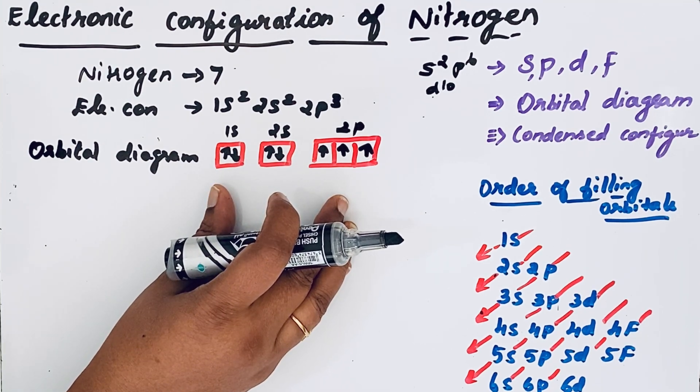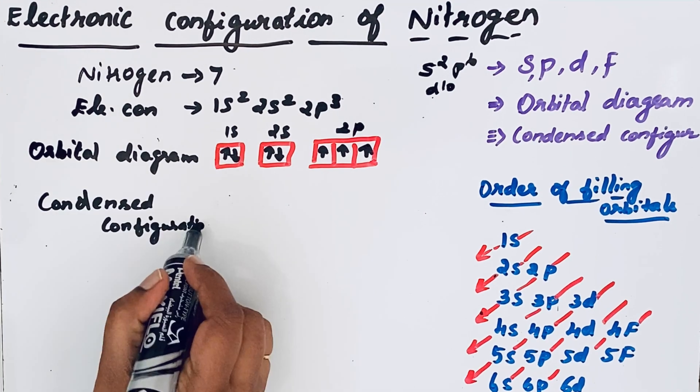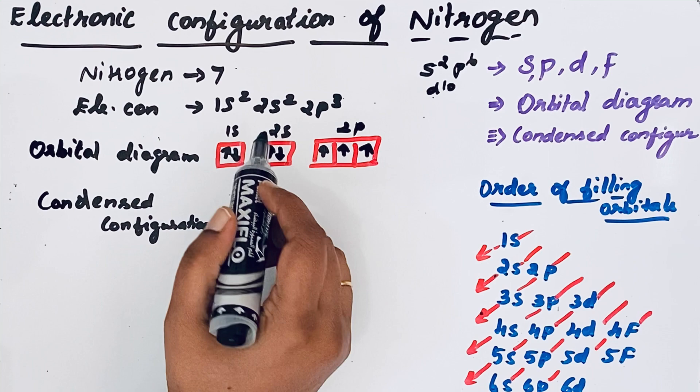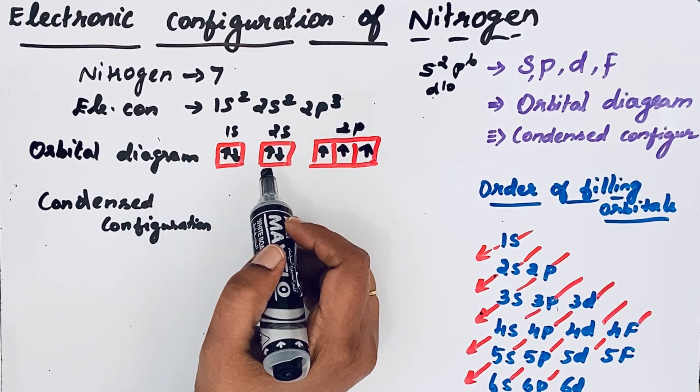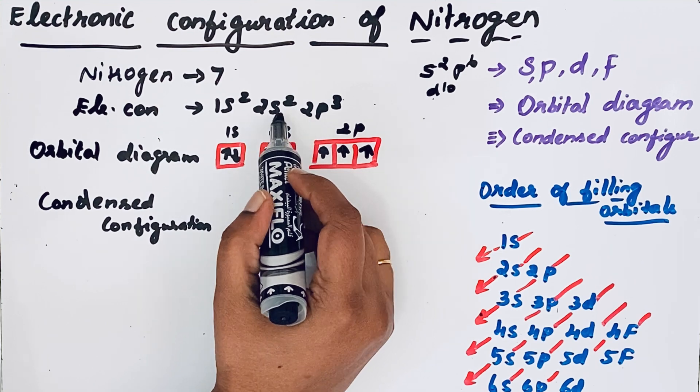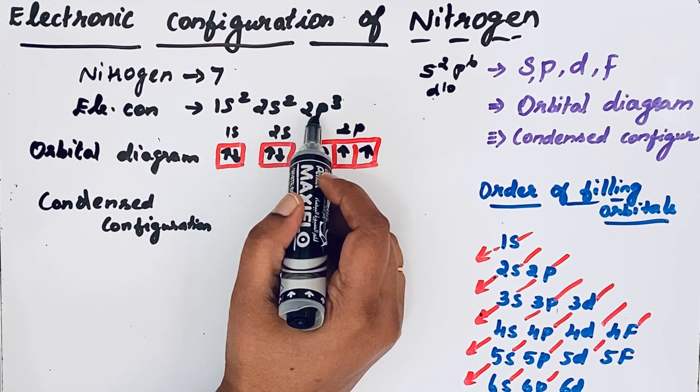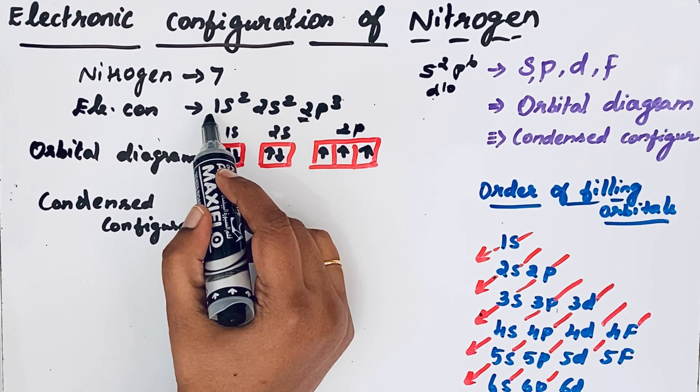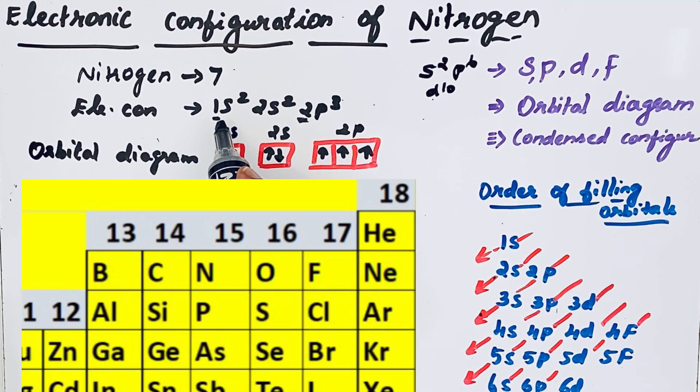Now we can see the condensed configuration. Here we use noble gas to simplify the electronic configuration. For example, see nitrogen. Nitrogen is in the second period 2s2 2p3. Now we can use the noble gas which is in the first period. If you see in the periodic table, the noble gas which is in the first period is helium.